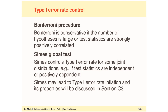By contrast, the question of when the Symes procedure controls the type 1 error rate is less straightforward. The Symes global test tests a single hypothesis — the global null hypothesis. The Symes test controls the type 1 error rate for certain joint distributions, for example when the hypothesis test statistics are known to be independent or positively correlated. We will go deeper into this in section C3.